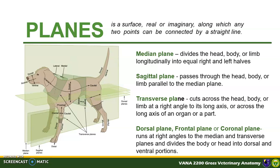A plane is a surface, real or imaginary, along which any two points can be connected by a straight line. The median plane divides the head, body, or limb longitudinally into equal right and left halves. The sagittal plane passes through the head, body, or limb parallel to the median plane, meaning any plane parallel to the median plane is termed a sagittal plane.